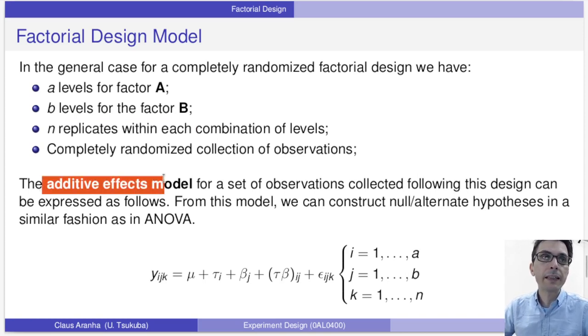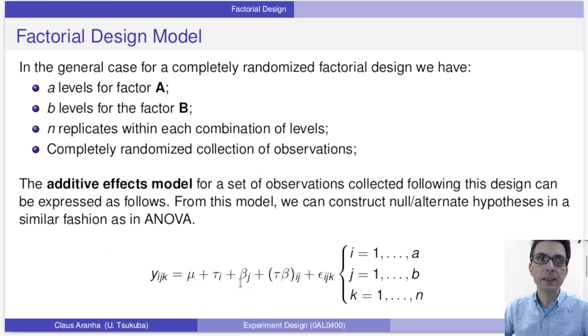Now we're using the additive effects model, which is expressed as follows. It says that for each effect, we have an additive component. So we have μ, that is the main mean of everything. We have τ, which is the main effect of the manufacturer. We have β, which is the main effect of original and rewinded. And then we have τβ, which is the interaction effect of i and j. So these are n replicates of this. And finally, we have the residuals that are other noise factors that we are not considering at the moment.